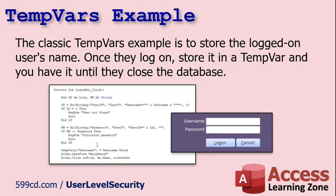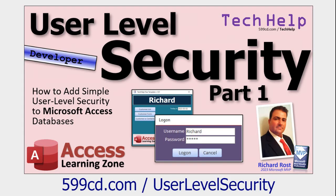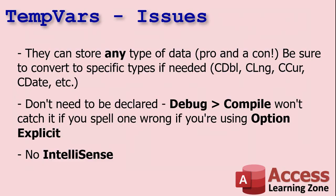The classic TempVars example is to store the logged-on username. You get it from the system environment or through a logon dialog, look it up in the table to make sure it's valid, and then set TempVars("Username") = username.Value. Remember, if you're getting it off a form you have to use dot value — I forget to do that a lot and then I get an error. I go through this example specifically in my user-level security video; I'll put a link below.